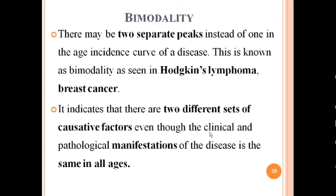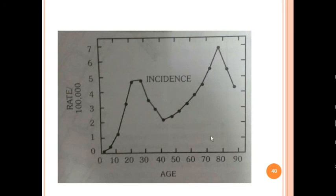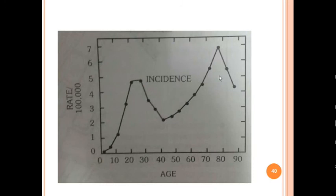Bimodality in disease incidence indicates two different sets of causative factors, even though the clinical and pathological manifestations may be the same in all ages. The incidence is increased in early years, follows a stagnant pattern in between, and then peaks again in later age groups. Hodgkin's lymphoma and breast cancer are typical examples of a bimodality pattern — this question is commonly asked in pre-PG examinations.